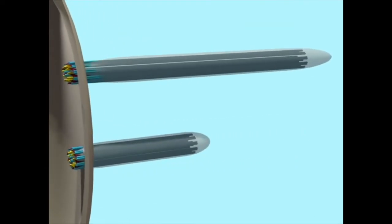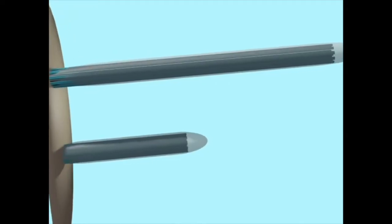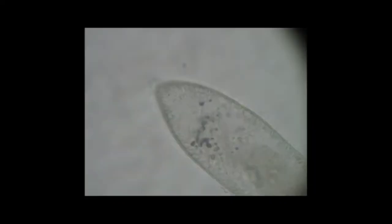A flagellum is a whip-like structure that allows a cell to move. They are found in all three domains of the living world: bacteria, archaea, and eukaryota, also known as protists, plants, and animals.